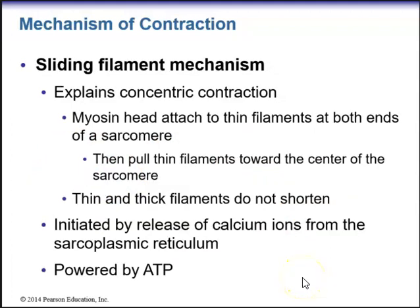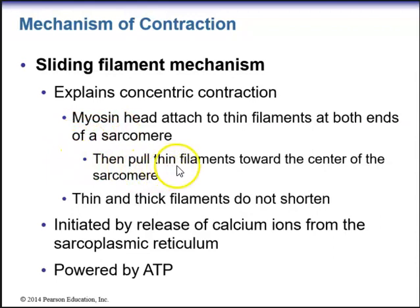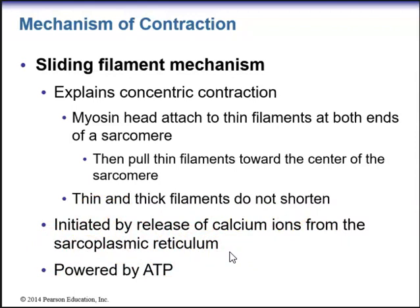This brings us to the mechanism of contraction — the sliding filament mechanism theory, which explains concentric contraction. Myosin heads located on the thick filaments attach to receptors on the thin filaments at both ends of a sarcomere. The myosin heads pull the thin filaments toward the center of the sarcomere. The sarcomere shortens, but the thin and thick filaments themselves do not shorten — they just slide past one another. This mechanism is initiated by the release of calcium ions from the sarcoplasmic reticulum and is powered by ATP.